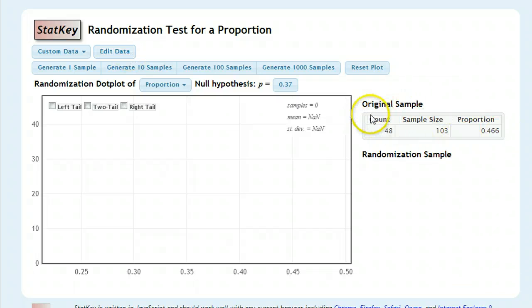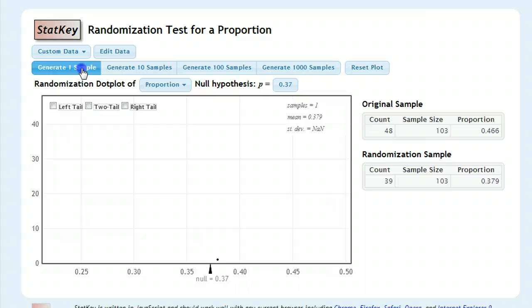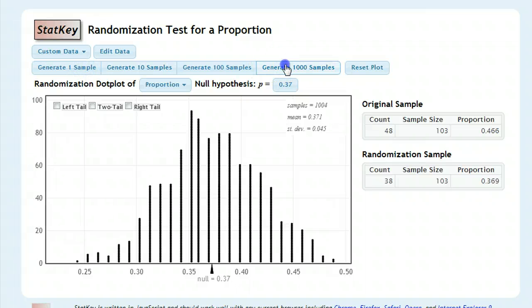And once we set our null and we have our data in here, we can see over here our original sample. It's going to randomly create samples like that. And we can start with one at a time, or just get right to it and generate a few thousand.